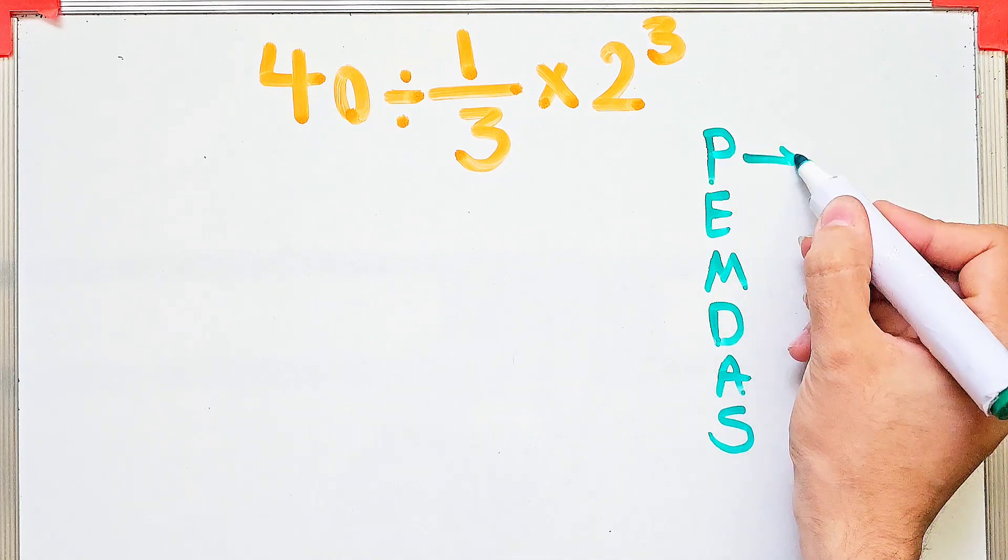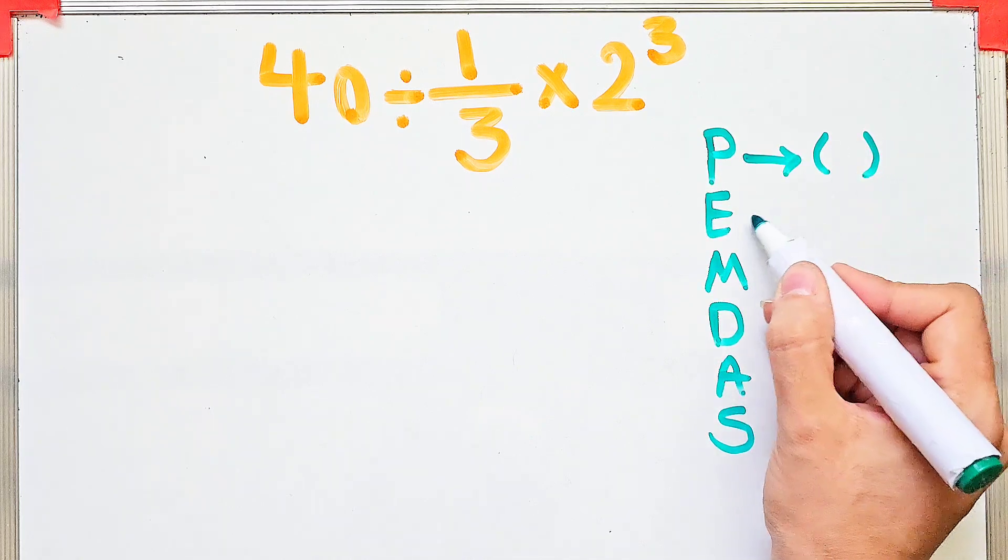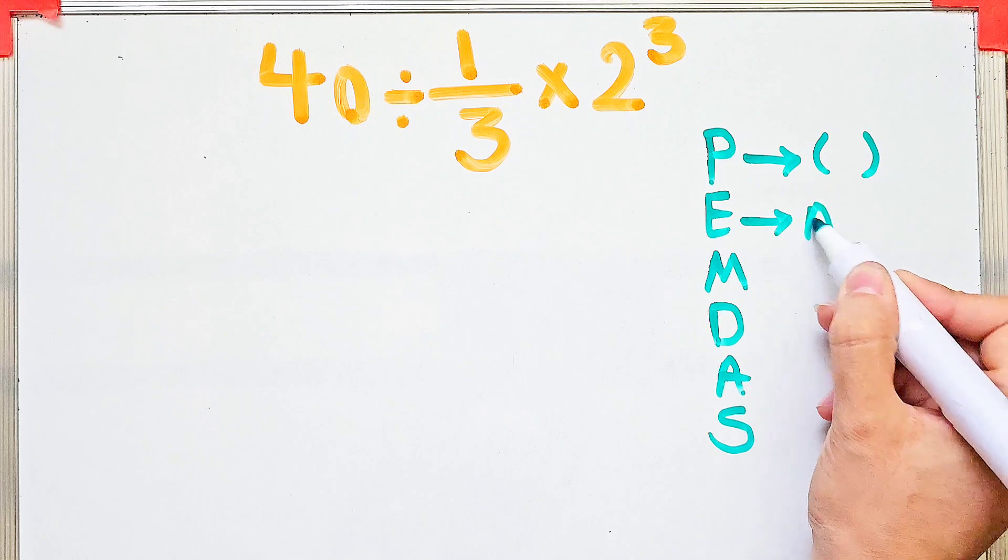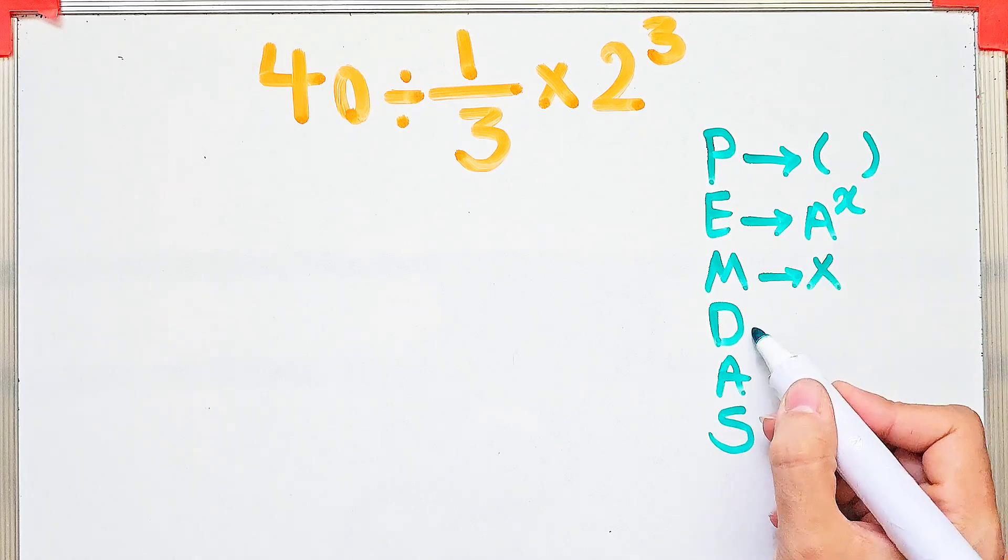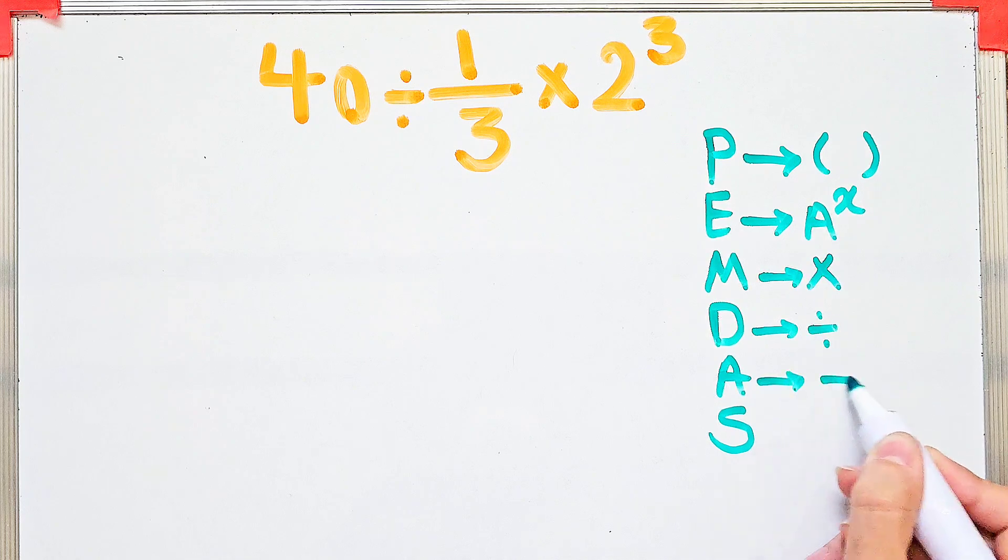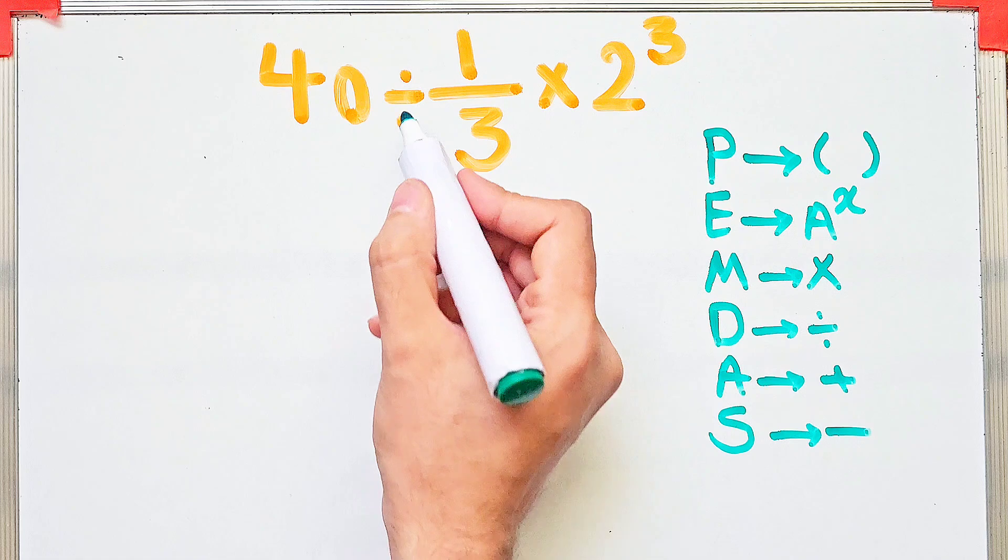In this rule, P stands for parentheses, E stands for exponents, M stands for multiplication, D stands for division, A stands for addition, and S stands for subtraction. In this question we have division, multiplication, and exponent.